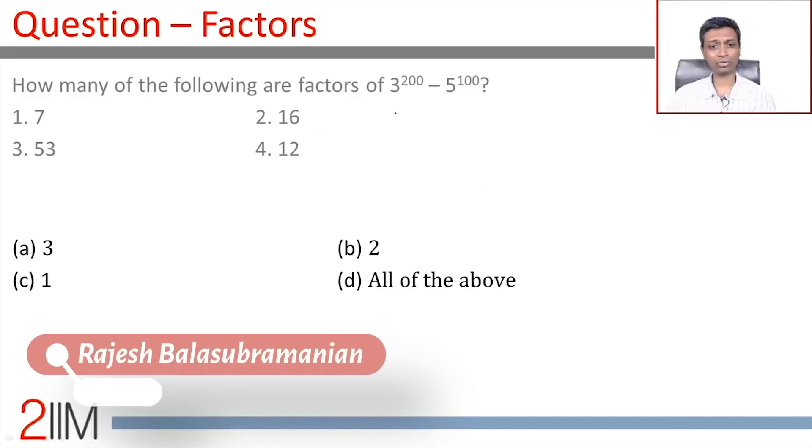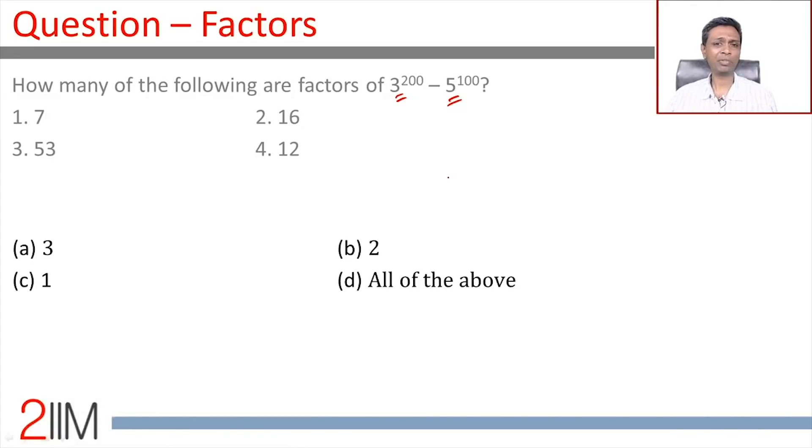How many of the following are factors of 3^200 - 5^100? Incredibly difficult question if you try to find these numbers, 3^200, 5^100, who even tries this? So we need to find some smart way of cracking this, 3^200 - 5^100. How do we go about doing this?